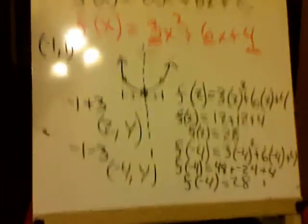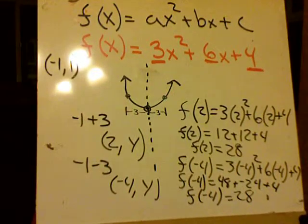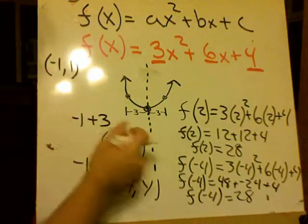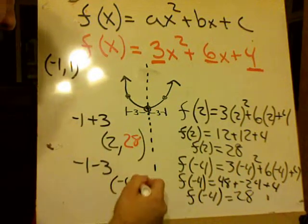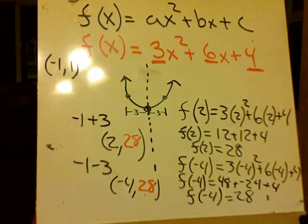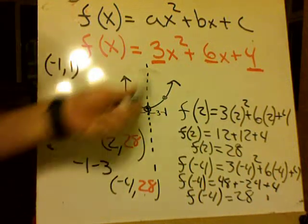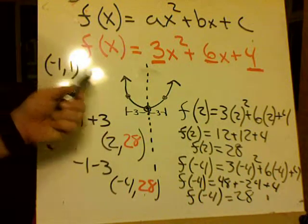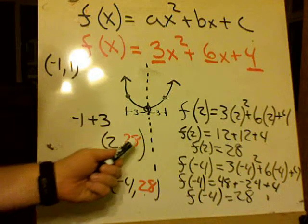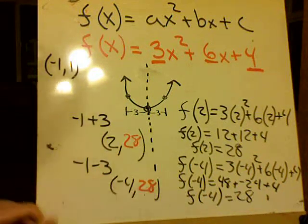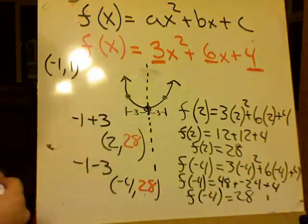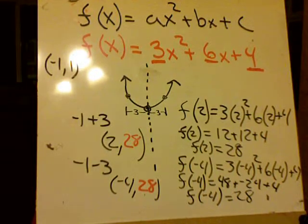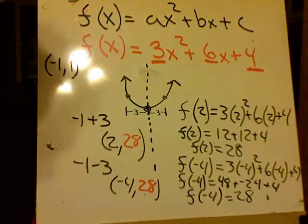So I've got my two symmetrical points. So the next step is to graph that, negative 1 and 1, 2 and 28, negative 4 and 28. And then I can just write in the curves. We can always use our graphing calculator to check our work as well.